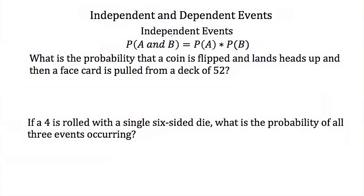Now if we have two independent events, we can calculate the probability that both of these events will occur by multiplying their individual probabilities. So the probability of A and B happening is equal to the probability of A happening times the probability of B happening.